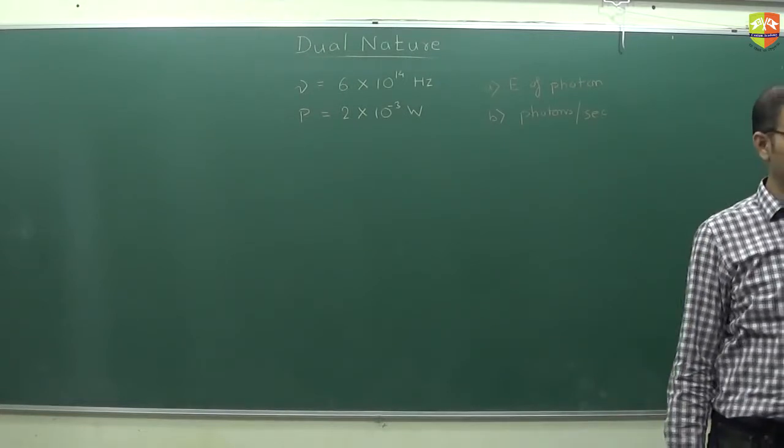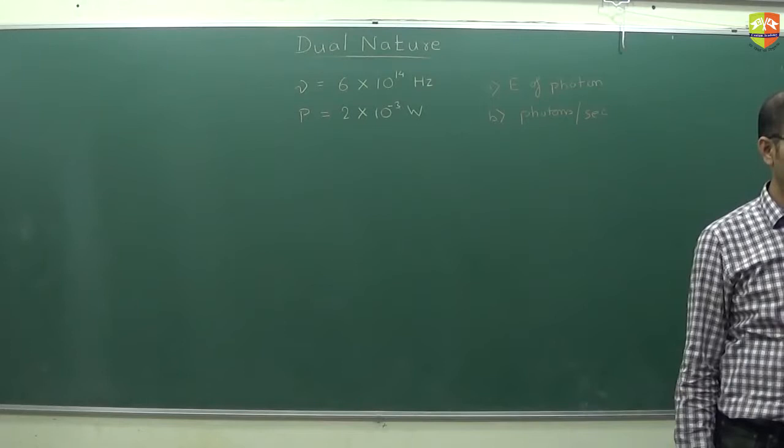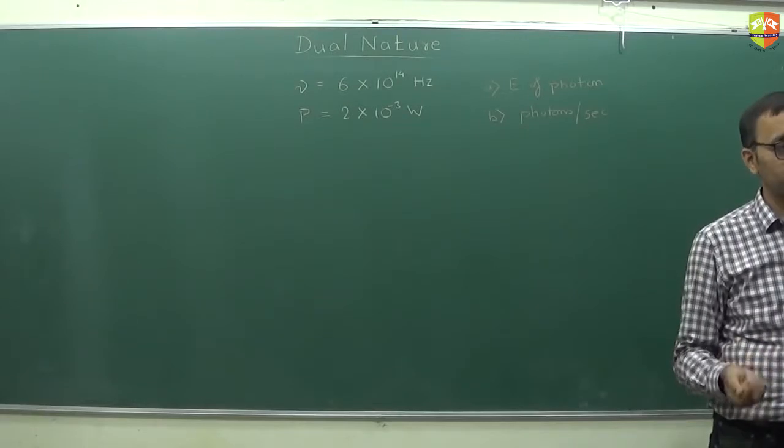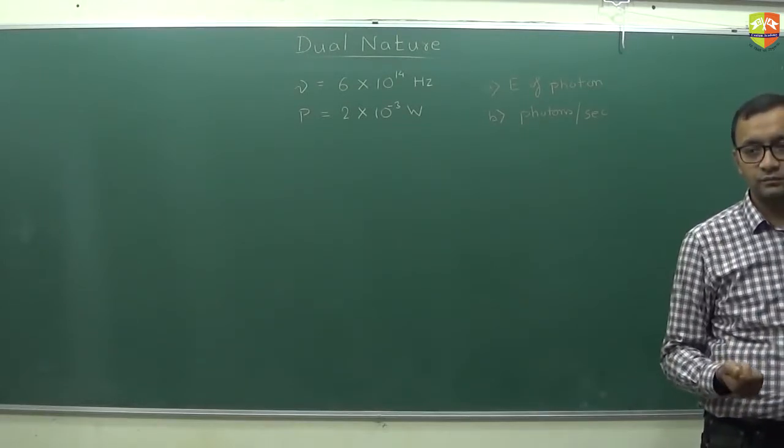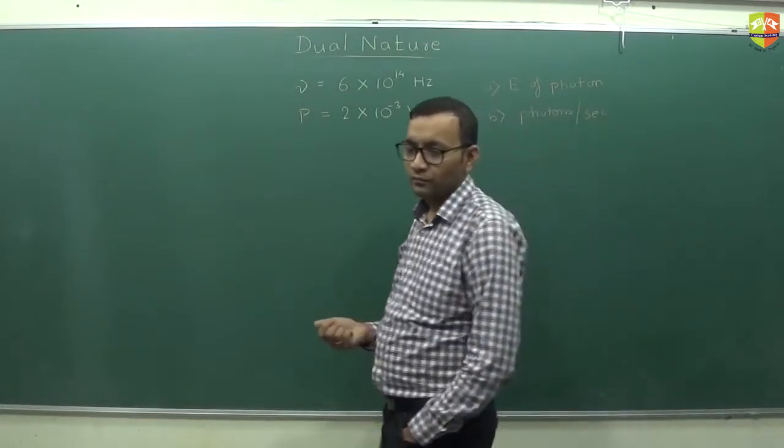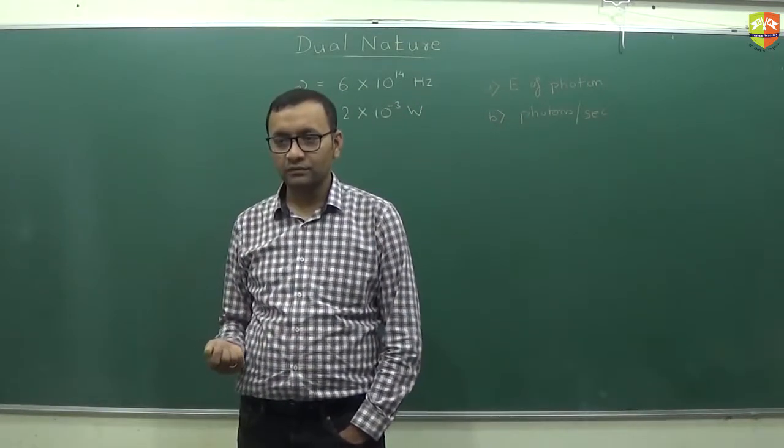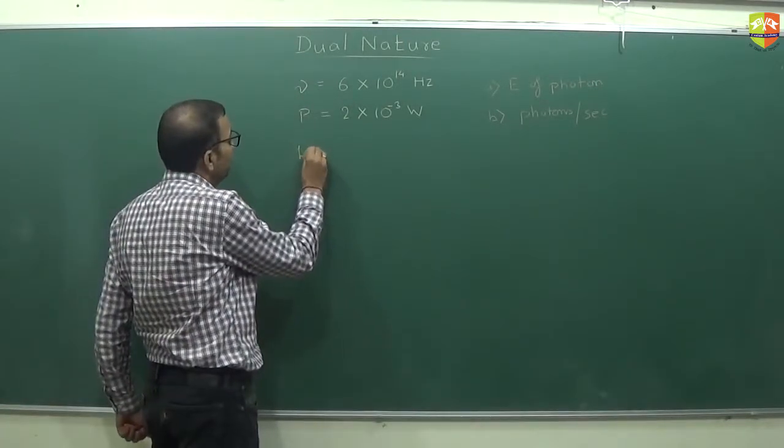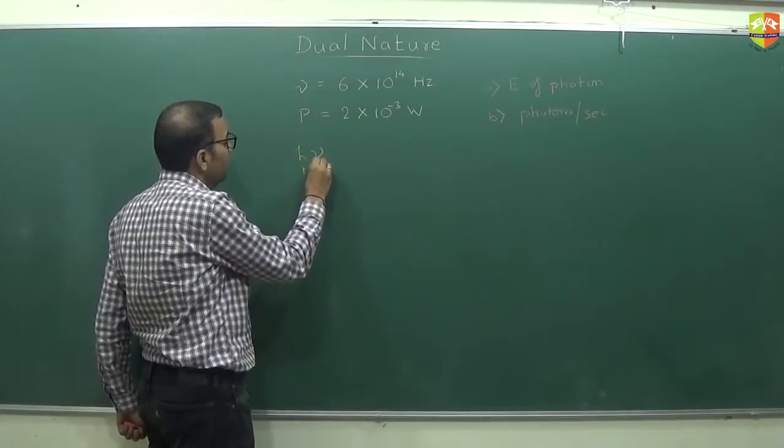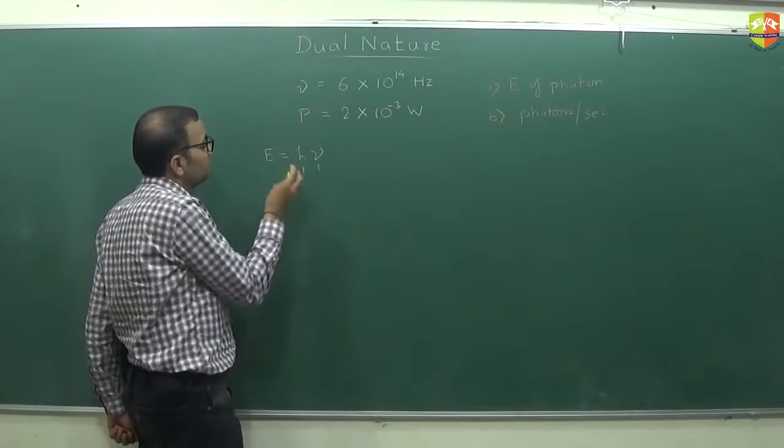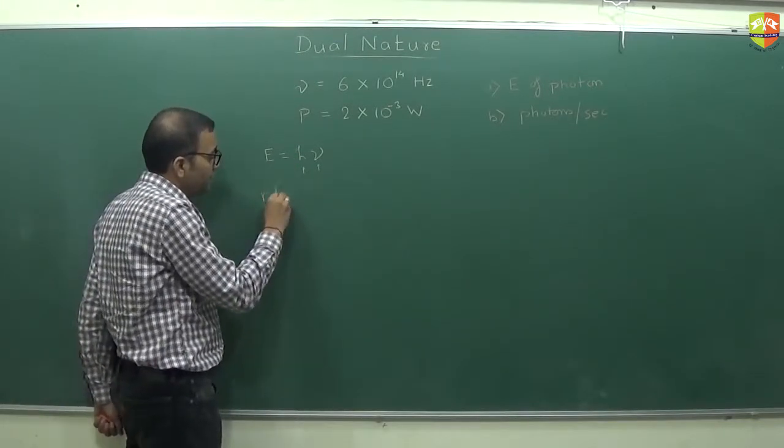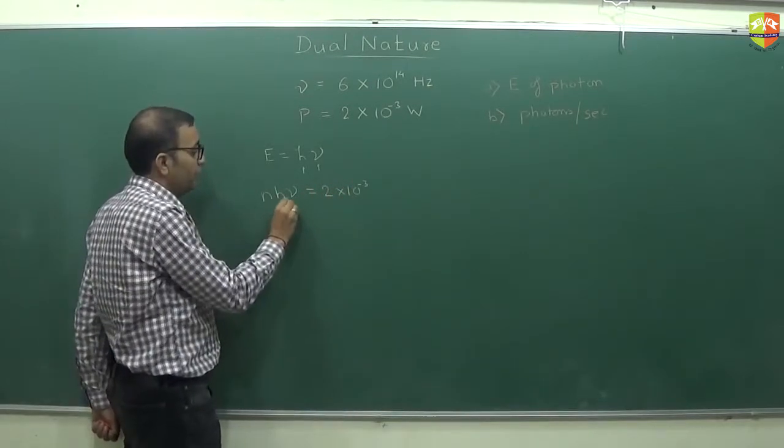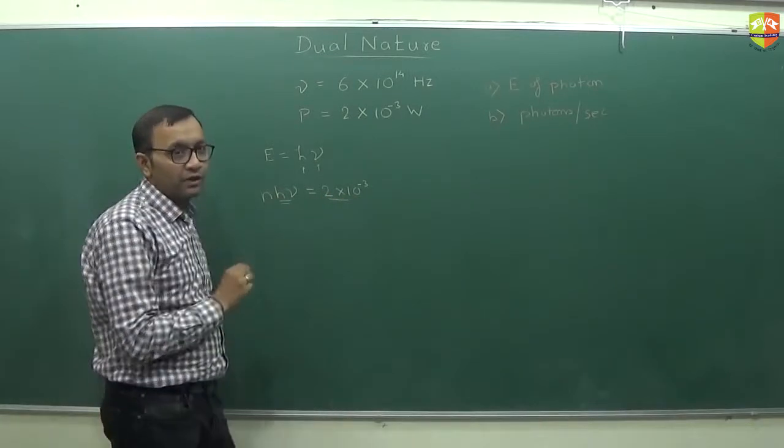Energy is 39.8 into 10 to the power minus 20 and number of photons per second is 5 into 10 to the power 15. Energy is h into mu. Just multiply h with mu, you will get energy. Number of photons per second into h into mu should be equal to 2 into 10 to the power minus 3. So if you divide h into mu from this, you get number of photons per second.